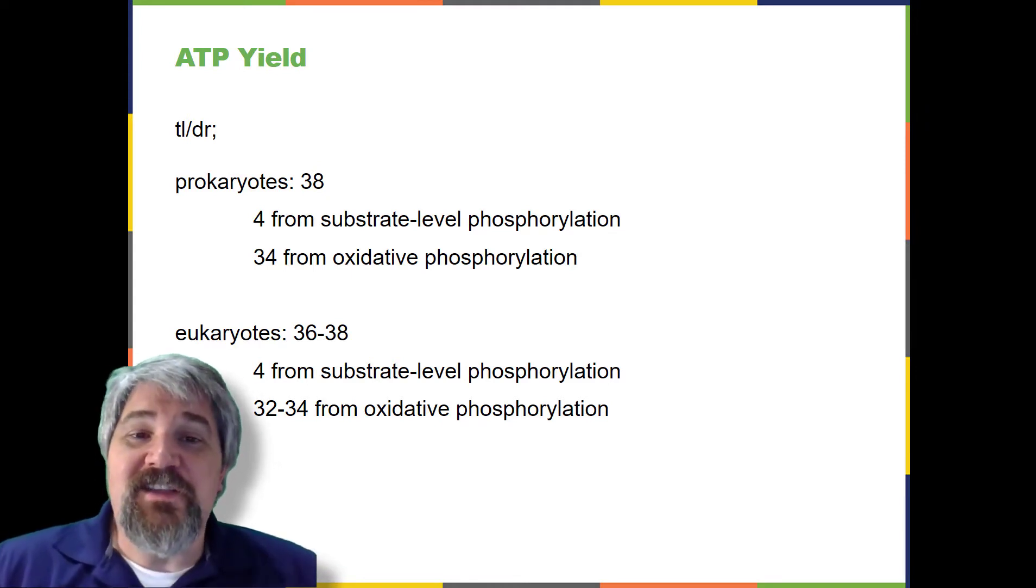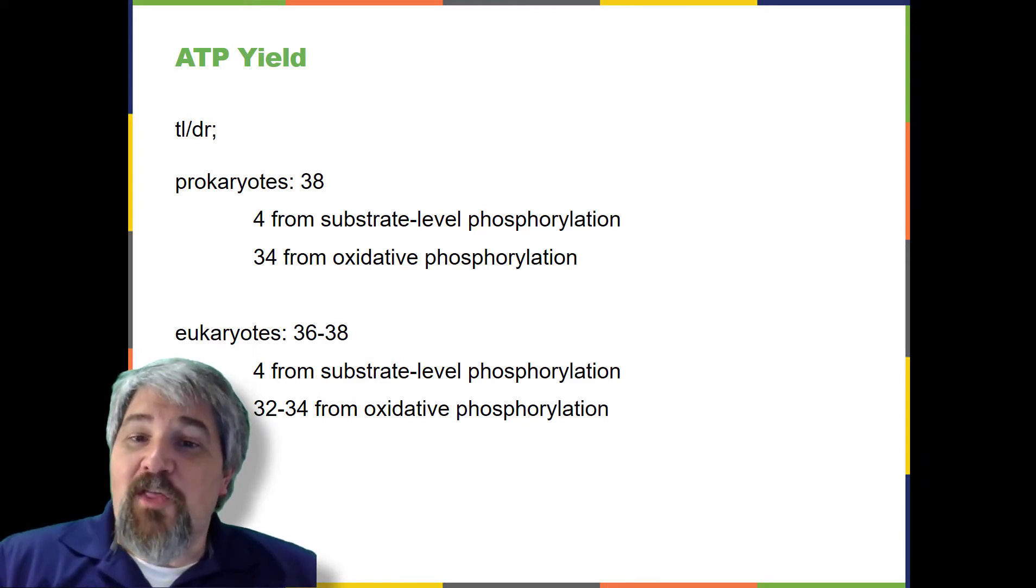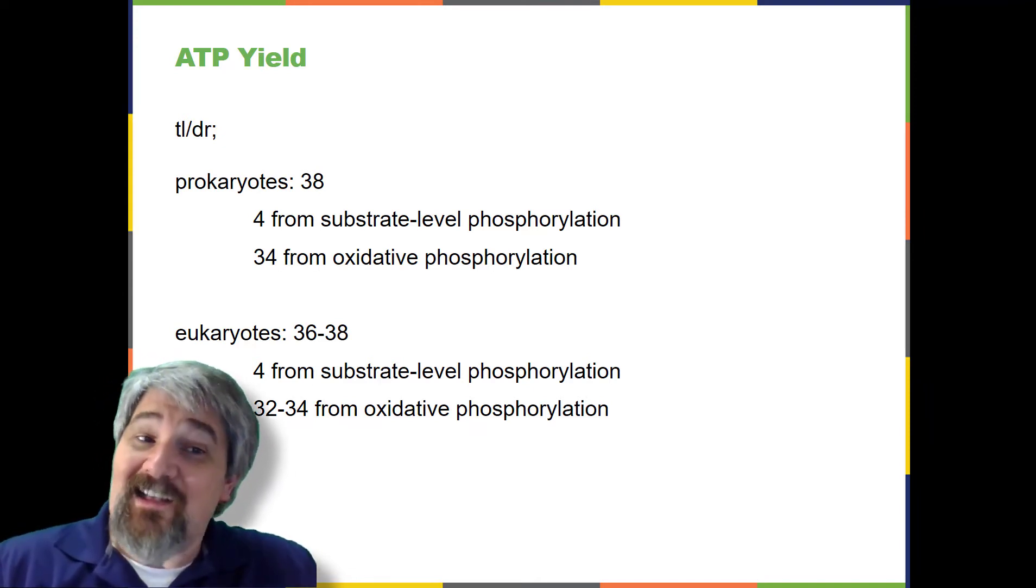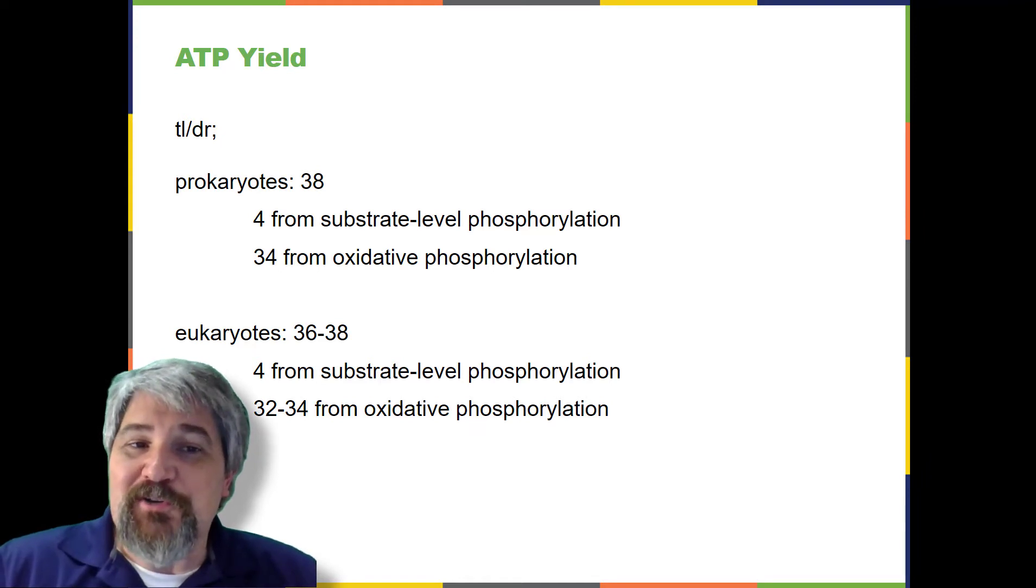Another factor that affects the yield of ATP molecules generated from glucose is that intermediate compounds in these pathways are used for other purposes. Glucose catabolism is connected with the pathways that build or break down all other biochemical compounds in cells, and the result is somewhat messier than the ideal situation described thus far. For example, sugars, other than glucose, are fed into the glycolytic pathway for energy extraction. Other molecules that would otherwise be used to harvest energy in glycolysis or the citric acid cycle may be removed to form nucleic acids, amino acids, lipids, or other compounds. Overall, in living systems, these pathways of glucose catabolism extract about 34% of the energy contained in glucose.